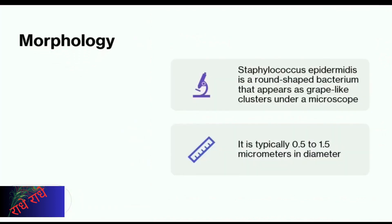Staphylococcus epidermidis is a common bacterium appearing under a microscope as round-shaped clusters resembling grapes. These clusters typically measure 0.5 to 1.5 micrometers in diameter.